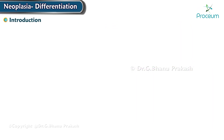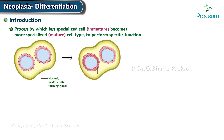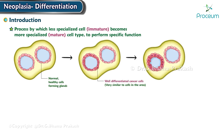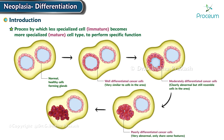Differentiation is a process by which a less specialized or immature cell becomes a more specialized or mature cell type to perform a specific function.